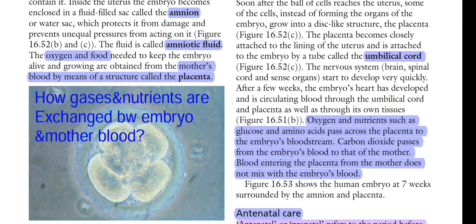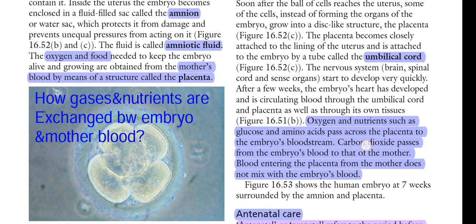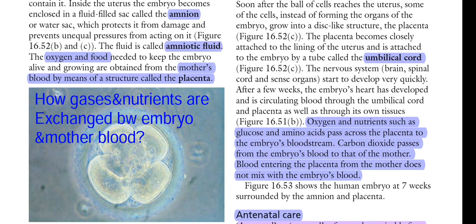The placenta is a double organ formed by both mother and baby. The baby contributes the chorionic villi, and the mother contributes the decidua basalis. Oxygen and nutrients such as glucose and amino acids pass across the placenta into the embryo's bloodstream. Carbon dioxide passes from the embryo's blood to the mother's blood entering the placenta. Importantly, the mother's blood does not mix with the embryo's blood.